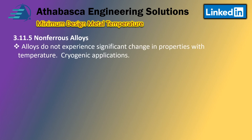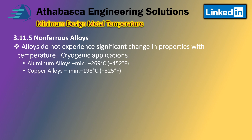Alloys that do not experience significant changes in properties are used for cryogenic applications. These materials don't have the same issues as carbon steel. For aluminum, you're good to minus 269°C — phenomenal, which is pretty close to absolute zero — which is why they're commonly used for refrigeration systems. For copper alloys you're down to minus 198°C. Titanium alloys are somewhat cryogenic, rated to minus 59°C or minus 75°F.